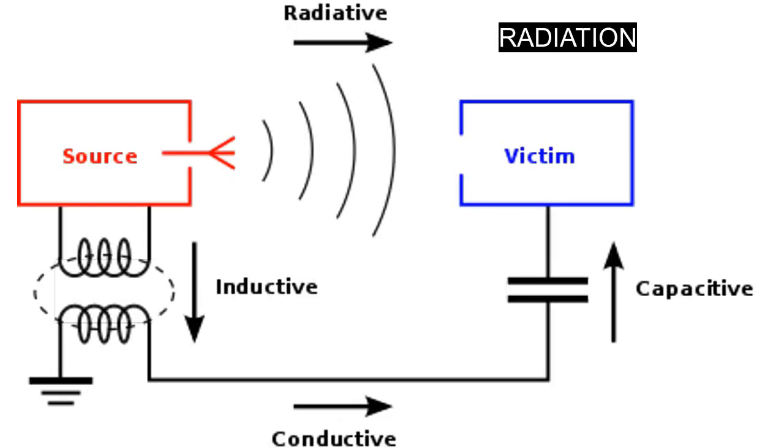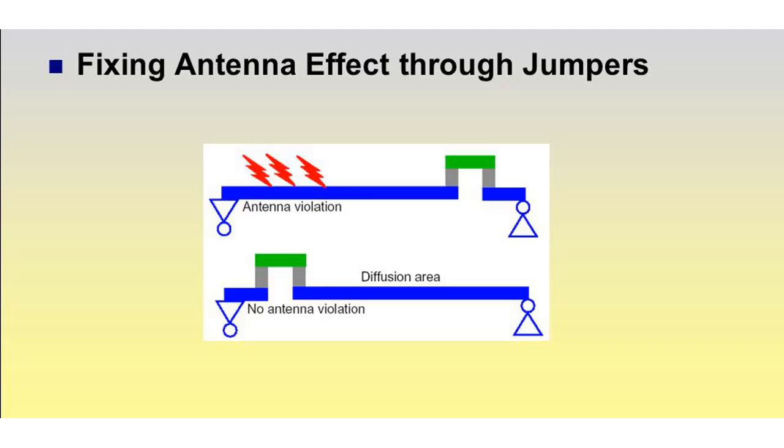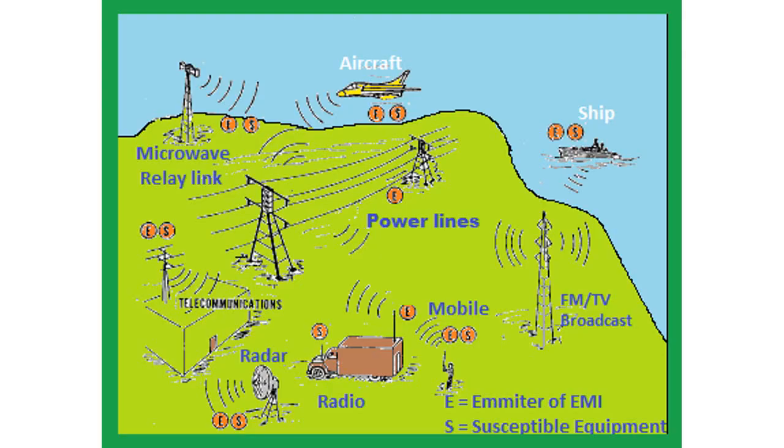Noise can not only propagate along direct connections but also through the air via radiation. Once HF signals are generated inside a system, they are simply propagating along the path of least resistance. If the structure or layout of the system provides good antenna characteristics, the signals will use those parasitic antennas and radiate from the system into the air. There, the noise travels as electromagnetic waves and can be picked up by other equipment along its path.